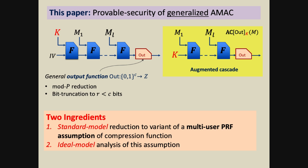The first ingredient is a standard model reduction that reduces the multi-user security of the augmented cascade to a new multi-user PRF assumption on the underlying compression function. Then, to get some numbers and compare it — since it's a new assumption — we also do an ideal model analysis of this assumption that will give us some concrete numbers.